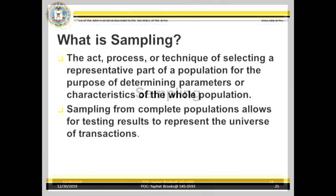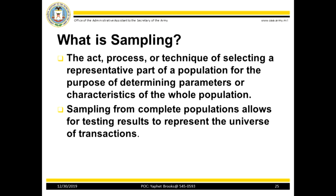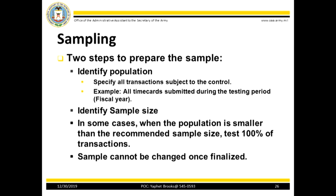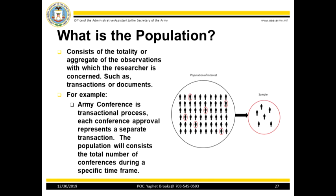We will discuss sampling. Effective testing will generally require examining a control at a particular location in different instances, referred to as sampling. This year, the preferred method of testing is sampling. Two steps to prepare the sample: identify the population, and identify the sample size. In some cases, when the population is smaller than the recommended sample size, test 100% of the transactions. Your sample cannot be changed once finalized. For OAA, your population will be all the transactions or documents from the last time you conducted an evaluation until the day that your AUM signs your DA Form 11-2. If this is the first time you evaluated this program, please use 1 June 2019 as the first day of your transactions and use the day your AUM signs the DA Form 11-2 as the last day.